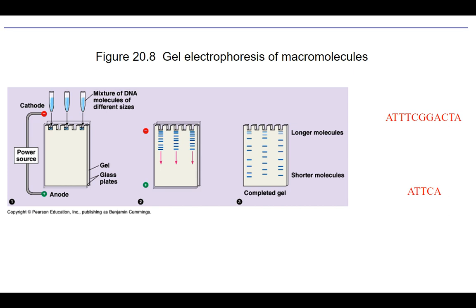That pattern you get from a sample — where the bands are located and how they're spread out — is sometimes referred to as a DNA fingerprint. Not because it has anything to do with your finger — that's a different kind of fingerprint. But fingerprints, the physical pattern of ridges on your finger, are used to identify you because they're personal and unique. Similarly, the banding pattern your DNA makes when it's broken up by a specific restriction enzyme is unique to you, and slightly different from one person to the next. It's a unique identifier based on your genetic sequence.